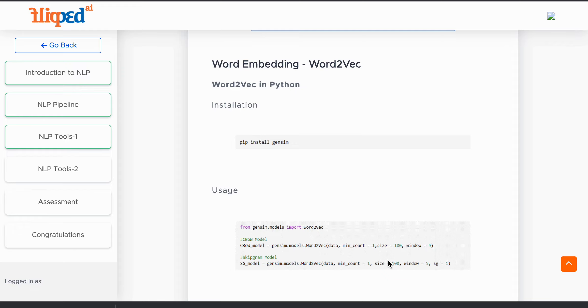These are the two ways to install Word2Vec in Python. A library called Gensim is used to install Word2Vec. We can build continuous bag of words model by calling Word2Vec function from Gensim library and by providing necessary functions and parameters.